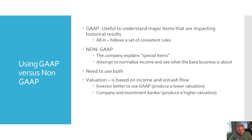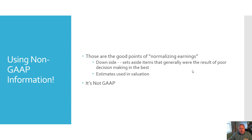For an investor, you're better off using GAAP because it's going to generally produce a lower valuation. A company, an investment broker, or an investment banker, on the other hand, is going to try to use more non-GAAP because it generally will produce a higher valuation. So when we get into valuation, we're going to see this pull and push that goes on. Those are the good points of normalizing earnings.